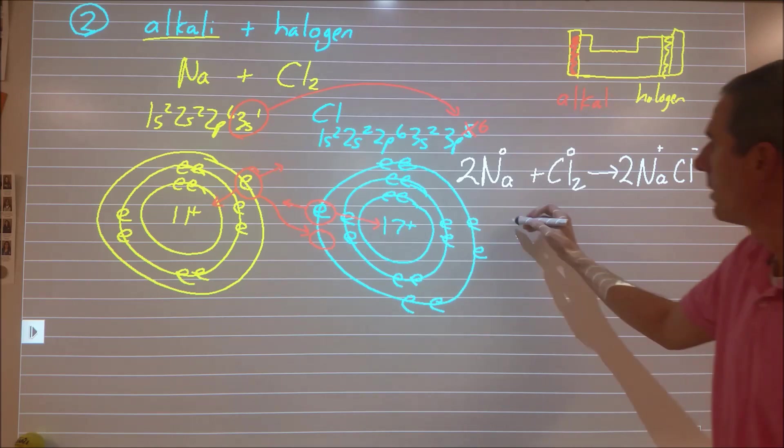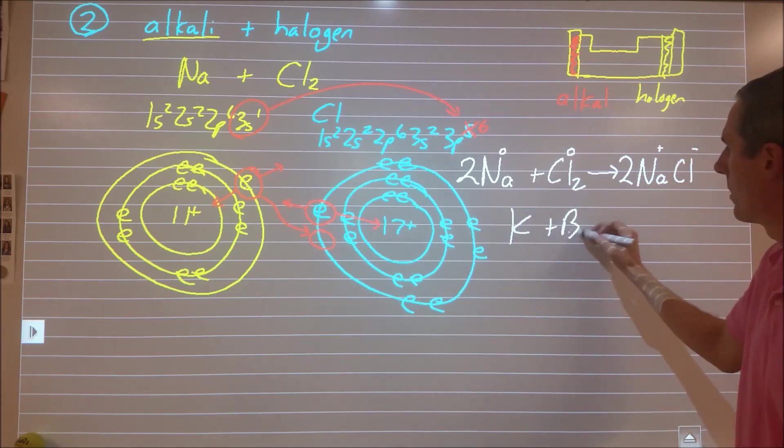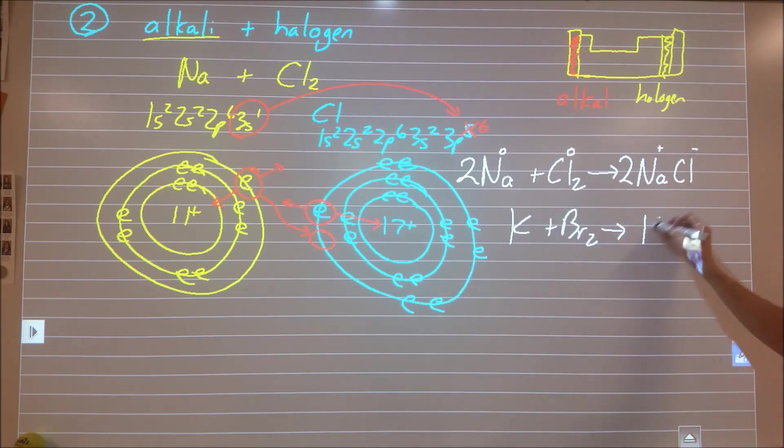From there, any other reaction we do, whether it's potassium plus bromine, whatever, it doesn't matter. You're just going to end up making the salt. And they're all plus 1, minus 1 for alkali and halogens. So it's really simple. You just have to watch out for diatomics.